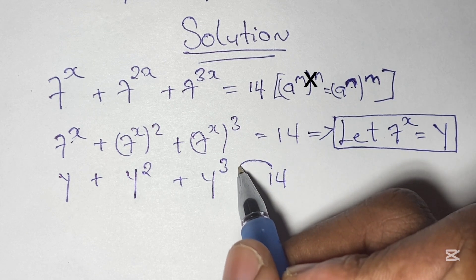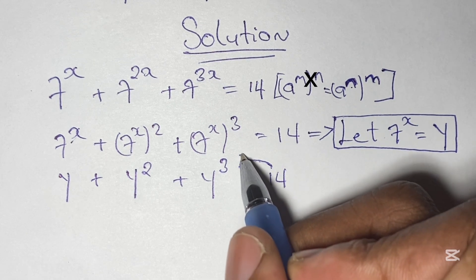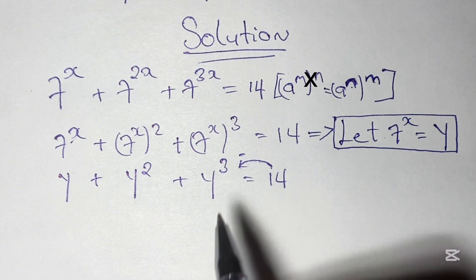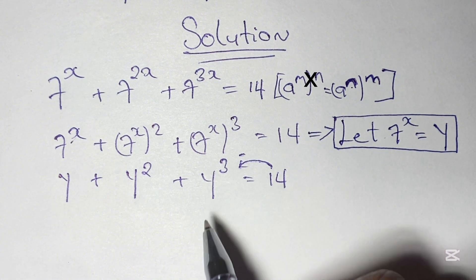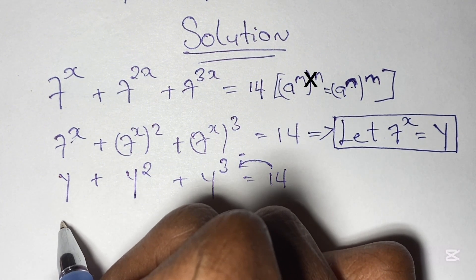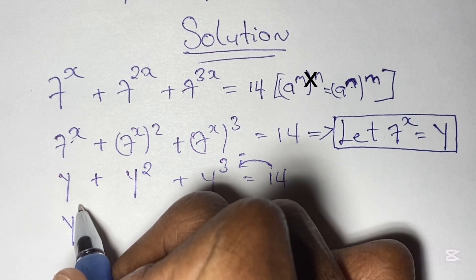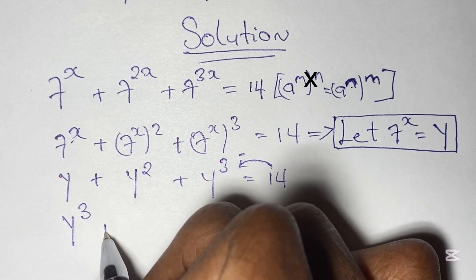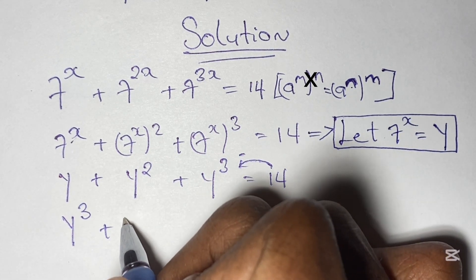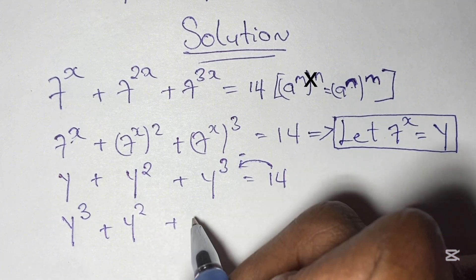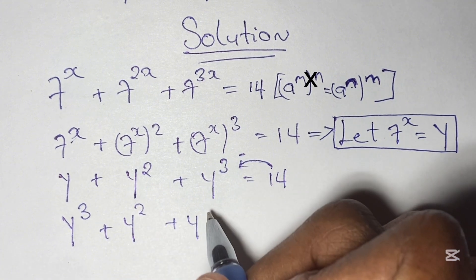From here we take 14 to the left hand side of the equation, so it becomes negative 14. We rewrite our equation with y cubed at the front: y cubed plus y squared plus y minus 14 is equal to 0.